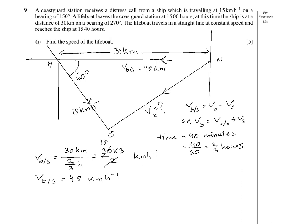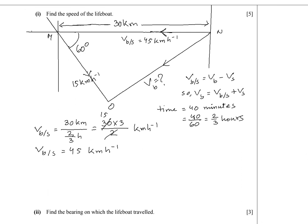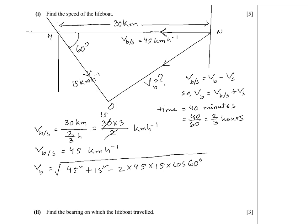We have found the magnitude of this relative velocity. Let's use the cosine rule again. The speed of the boat is the square root of 45 squared plus 15 squared minus 2 times 45 times 15 times cos 60, which gives 15 times square root of 7 km per hour.